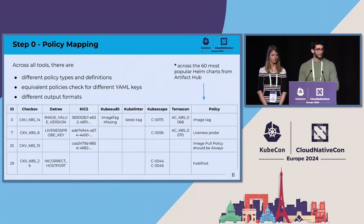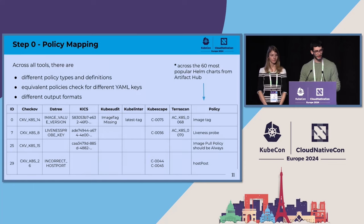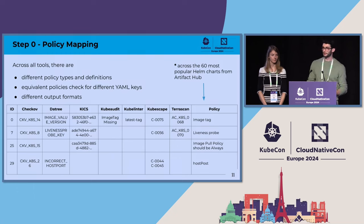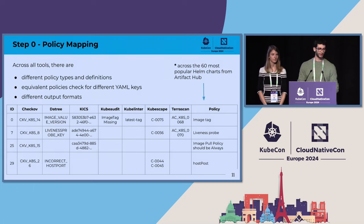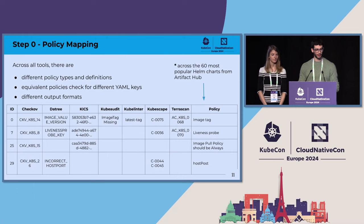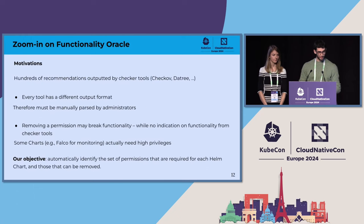Step zero happened before we built the pipeline. It was needed because all such tools have different policy types and definitions, so we needed a standardization over policies from different tools. There are also some policies in common — some are equivalent in description but actually check for different configuration keys in practice — and there are different output formats. The table shows some examples of policies in common between all the tools, between two of them, and so on.